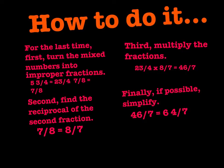Third, multiply the fractions. 23 over 4 times 8 sevenths equals 46 over 7. Finally, if it's possible, simplify the fraction. 46 over 7 equals 6 and 4 sevenths.